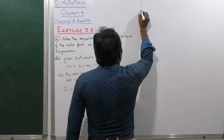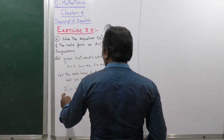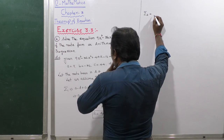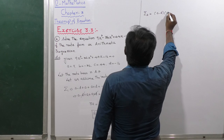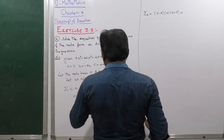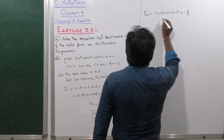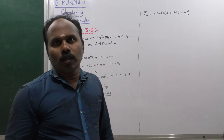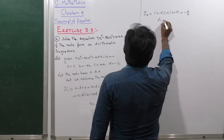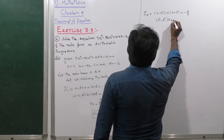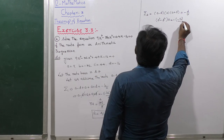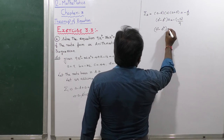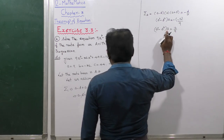Next, to find the value of d, we use the product of roots formula. The product of roots (a minus d) times a times (a plus d) equals minus d divided by a, which equals minus 16 divided by 9. Since (a minus d)(a plus d) equals a² minus d², we get (a² minus d²) times a equals 16 divided by 9.